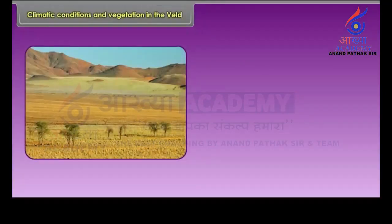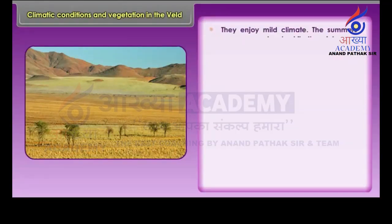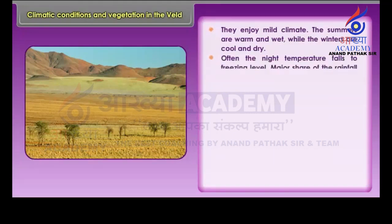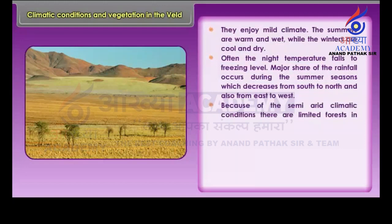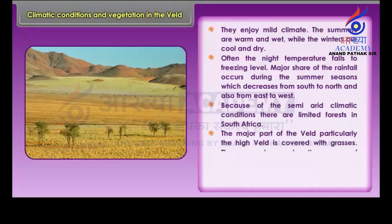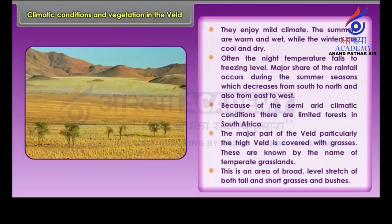The Veld enjoys a mild climate. The summers are warm and wet, while the winters are cool and dry. Often the night temperature falls to freezing level. The major share of rainfall occurs during the summer seasons, which decreases from south to north and also from east to west. Because of the semi-arid climatic conditions, there are limited forests in South Africa. The high Veld is covered with grasses — a broad, level stretch of both tall and short grasses and bushes.